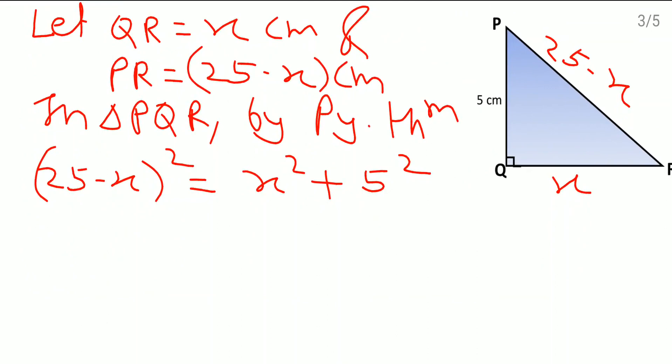According to A minus B the bracket square identity I will make the square of this. Some of the times children do the mistake here. They directly write down 25 square and X square. Not like this way.